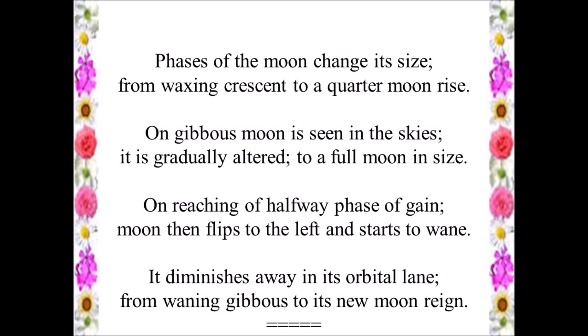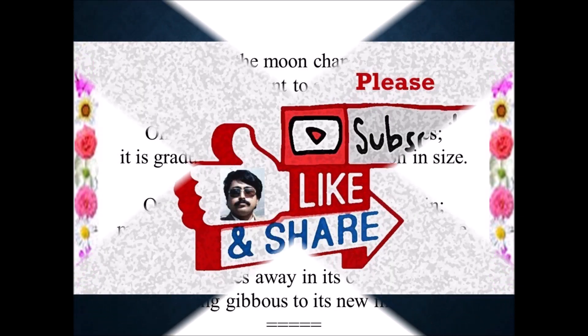Moon then flips to the left and starts to wane. It diminishes away in its orbital lane, from waning gibbous to its new moon again.